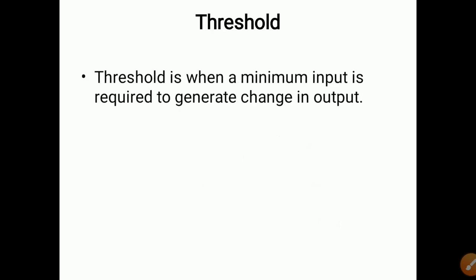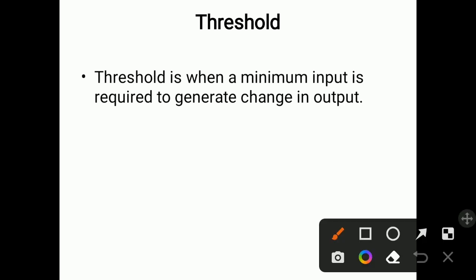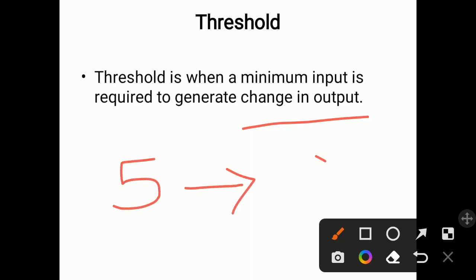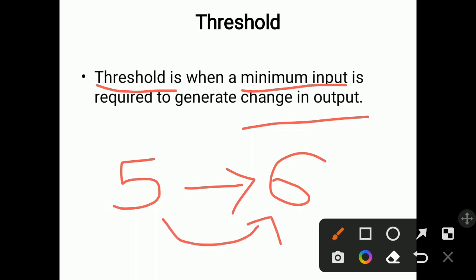Now, threshold: threshold is the minimum input required to generate a change in output. Suppose the current reading is 5 and you want to change it to 6 — the minimum input required to cause that change is called the threshold.